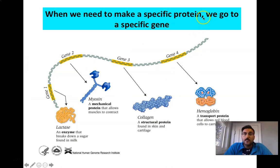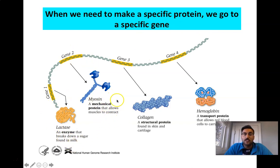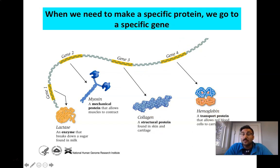When we need to make a specific protein, we go to a specific gene. Gene 1 might make lactase, an enzyme that breaks down milk. Gene 2 might make myosin, a protein in your muscles. Gene 3 might make collagen, a protein in your skin. Gene 4 might make hemoglobin, a protein in your blood.